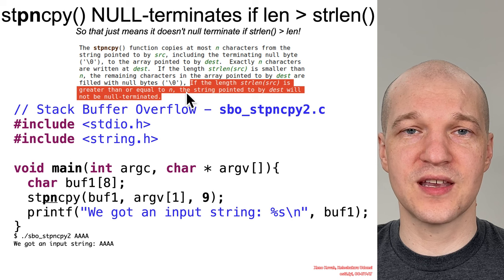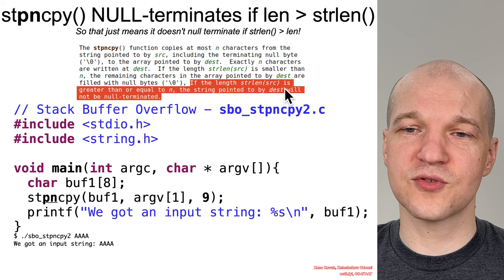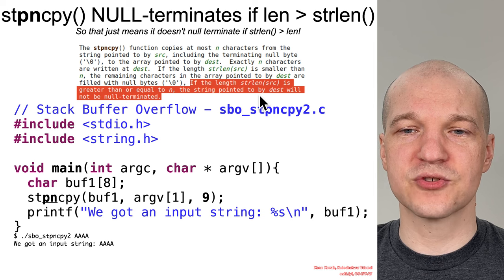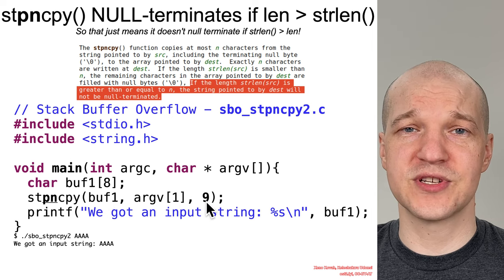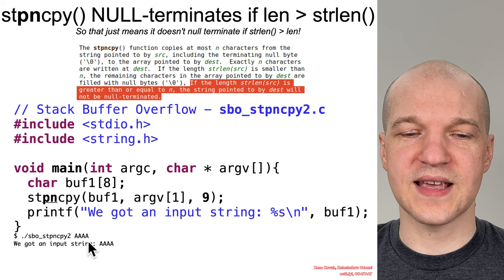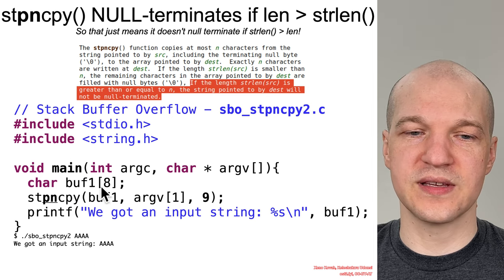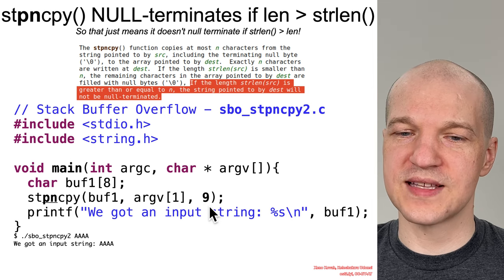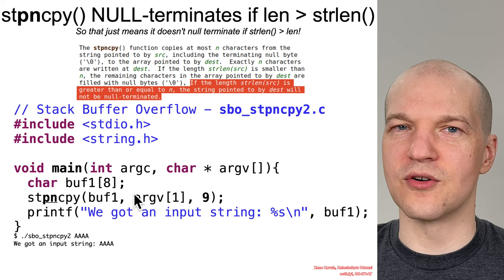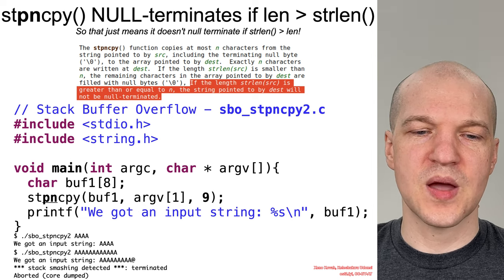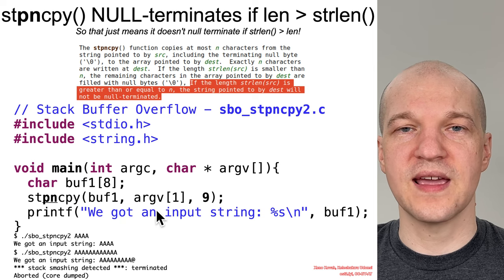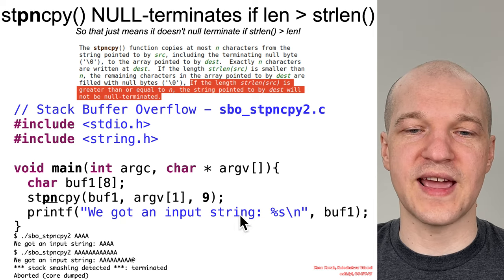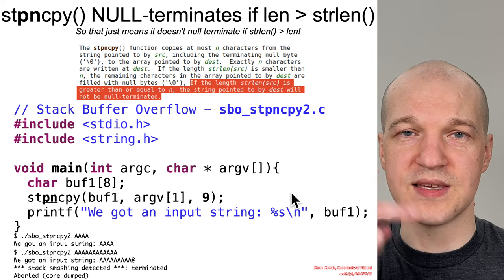stpncpy can also have the problem of non-null termination. Looking one more sentence down in the man page, it says: if the length of source is greater than or equal to n, the string pointed to by dest will not be null terminated. For instance, you could have it closer to correct — maybe just off by one, saying nine. If you pass a small string like four A's, it'll happily copy it and fill in the remaining characters. Maybe it just overflows by one and maybe that doesn't cause a problem. But if you provide too large an input, it doesn't guarantee null termination, and ultimately it's going to cause an error when it crashes at access time because it fails to find a null character as it keeps reading off the end of that string.